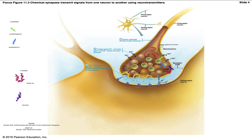As calcium enters, it binds to the C2A site of the synaptotagamin. The C2A site has an affinity for the phospholipids, so it gets pulled down, drawing the entire vesicle closer to the membrane. As that happens, the C2B site interacts with syntaxin, and simultaneously SNAP25 and synaptobrevin bind with one another. This forms what we call the core complex, which is how the vesicle ends up docked to the presynaptic membrane.